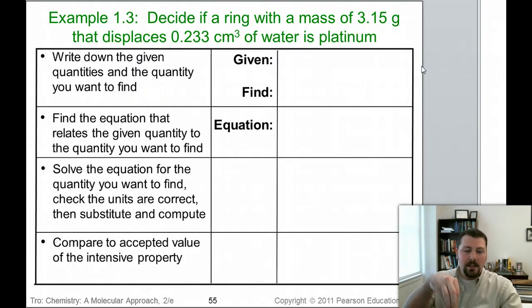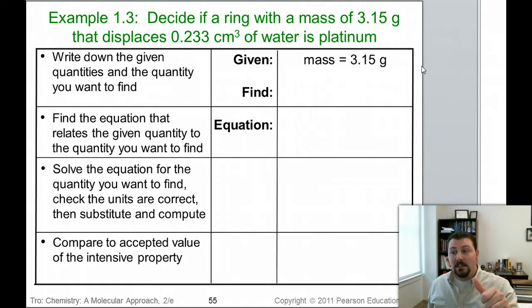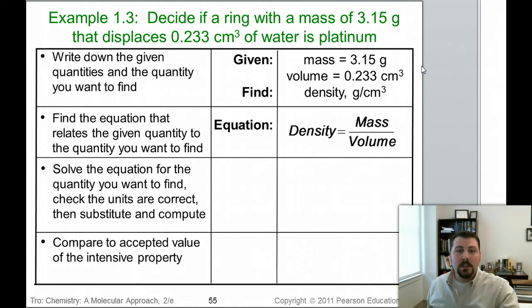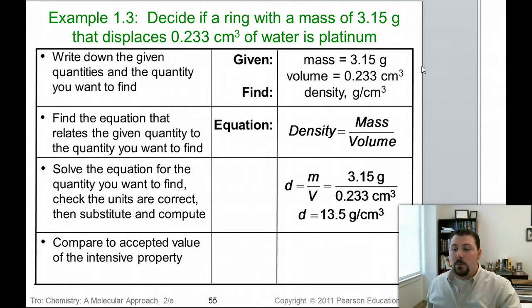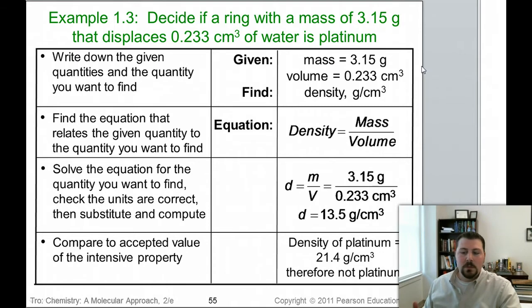I know the mass. I took that ring and put it on a balance and weighed it out, and it told me 3.15 grams. Then I took that ring and put it in a graduated cylinder, marked at 100 milliliters or 50 milliliters or whatever, and it went up by .233 milliliters. A cubic centimeter, a milliliter, the same there. Now I know the mass and the volume. All I have to do is take the mass and the volume, and put the mass over the volume to get grams per cubic centimeter. I use my equation, density is mass over volume. I plug in my numbers, 3.15 over .233, and I get 13.5 grams per cubic centimeter. So is it platinum? No, you'll remember platinum was 21.4. Therefore this is not platinum, it's some other metal. Whoever sold it to you was not being truthful.